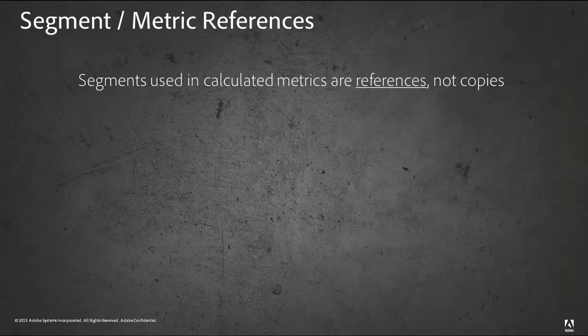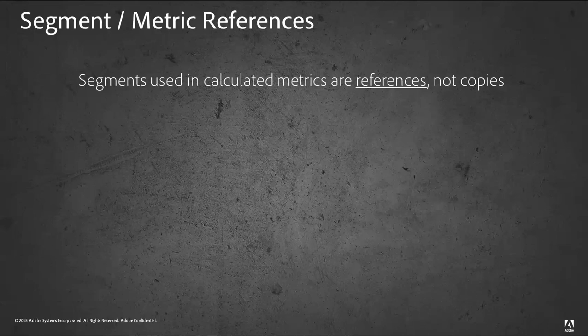Another key point here about segment and metric references: segments are used in calculated metrics as references, not copies. Previously, in Ad Hoc Analysis, when you created a segmented metric—basically a metric that was dependent upon a segment—it took a copy of that segment. What that meant is that if that segment changed down the line, because it was just taken as a snapshot or as a copy at the time that the calculated metric was made, it would not update to reflect the new segment, any variations or changes or edits to that segment.